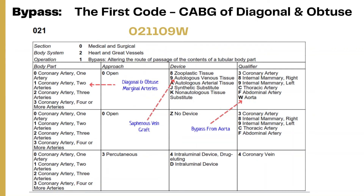The first code is for the bypass of the diagonal and obtuse marginal arteries. Section: medical and surgical. Body system: heart and great vessels. Root operation: bypass. Body part: two coronary arteries, because both the diagonal and obtuse marginal were bypassed using the same graft. Approach: open. Sixth character: autologous venous tissue, since the left greater saphenous vein graft was used. Seventh character: aorta, identifying where the bypass originated. This gives the first code: 0 2 1 1 0 9 W.